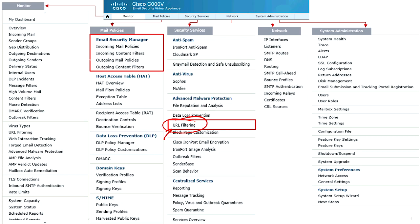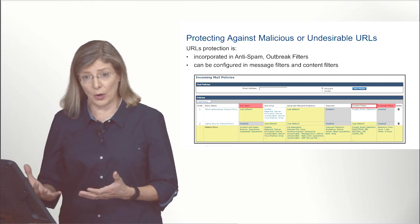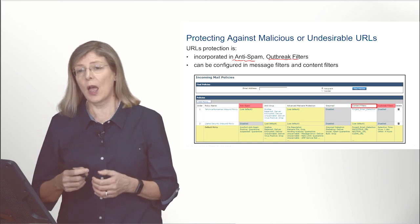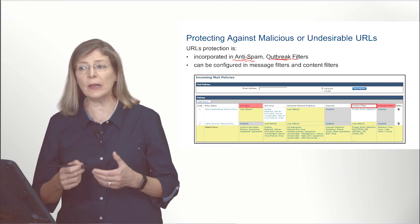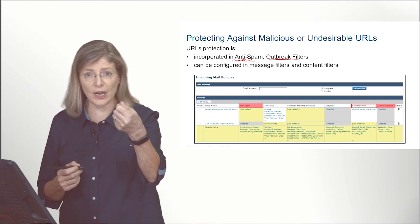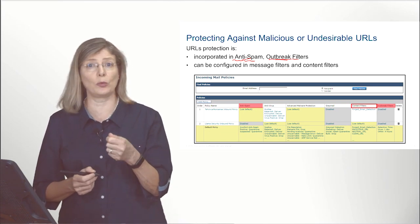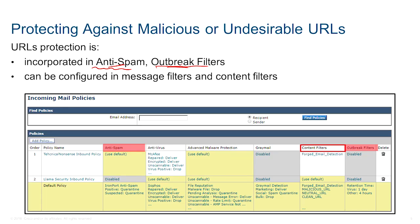What we want to do is configure URL filtering and apply filters on the email. Undesirable URLs are automatically included in anti-spam and outbreak filters — CASE checks every URL and queries Talos to find out if that URL leads to a website known to be a phishing attack or where a virus infection can be caught.